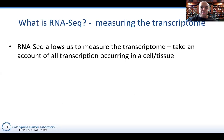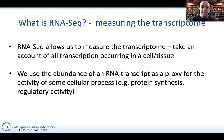RNA-seq allows us to measure transcription. All the messenger RNAs being transcribed — mostly — make up the transcriptome. We can look at an entire tissue or even zoom in to individual cells. We use the abundance of an RNA transcript as a proxy for the activity of a cellular process. If there's more of an mRNA that creates an enzyme, we assume more of that enzyme is being produced. We can also detect different isoforms produced through alternative splicing.